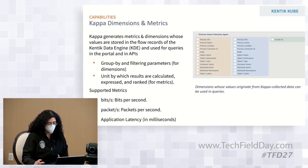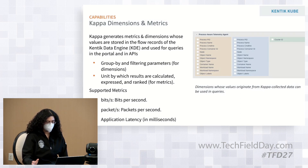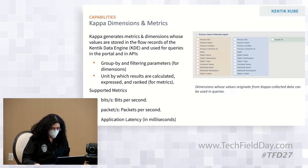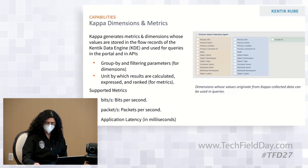With all that information, Kappa generates metrics and dimensions. The values of these are stored on the Kentik data engine and used for queries by customers. There are all kinds of different parameters — these are all different values that can be used when creating different alerts. Let me go into the demo.